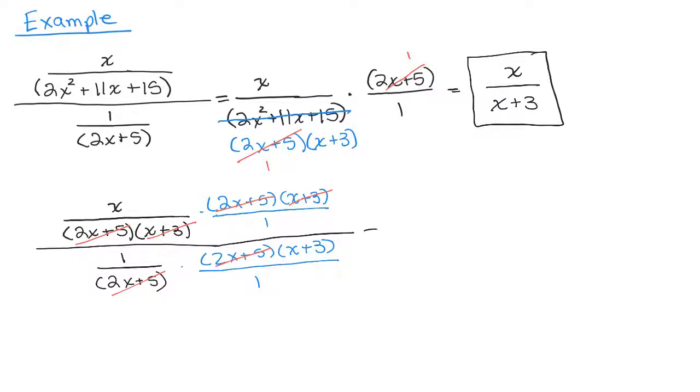So what do I have left in this numerator? I have an X over 1, which is X. And in the denominator, I have X plus 3 over 1, which is just X plus 3. And we get the answer.